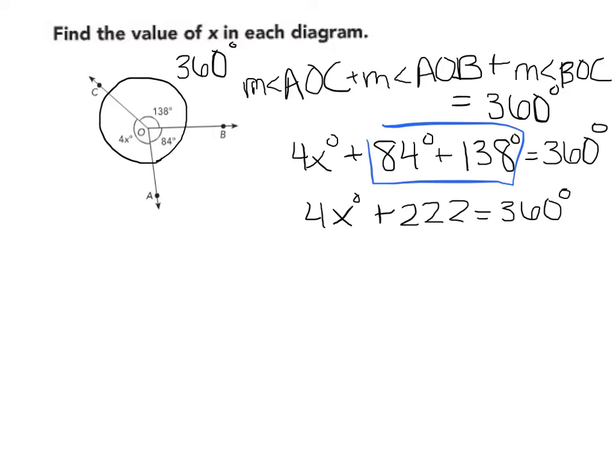Our next step is to subtract from both sides. So we are going to subtract 222 from both sides. That will leave 4x on this side of the equation, 4x degrees. And 360 degrees minus 222 degrees leaves us with 138 degrees.